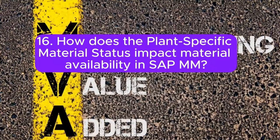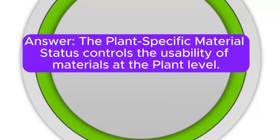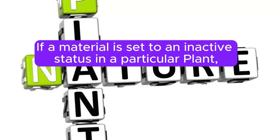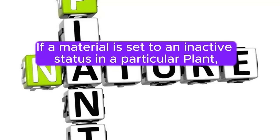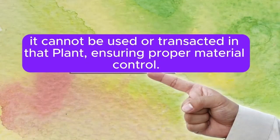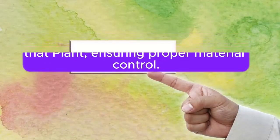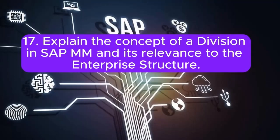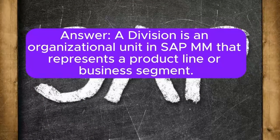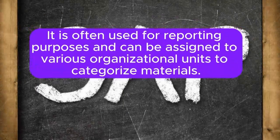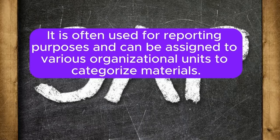Question 16: How does the plant-specific material status impact material availability in SAP MM? The plant-specific material status controls the usability of materials at the plant level. If a material is set to an inactive status in a particular plant, it cannot be used or transacted in that plant, ensuring proper material control. Question 17: Explain the concept of a division in SAP MM and its relevance to the enterprise structure. A division is an organizational unit in SAP MM that represents a product line or business segment. It is often used for reporting purposes and can be assigned to various organizational units to categorize materials.